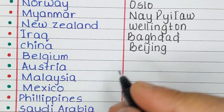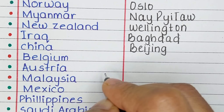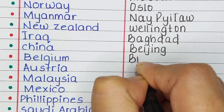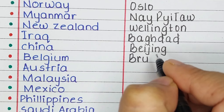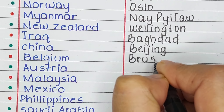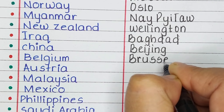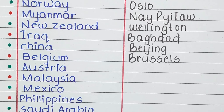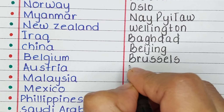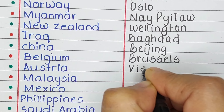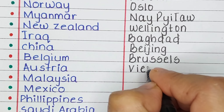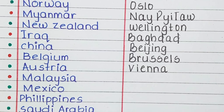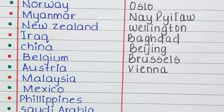Next is Belgium. The capital of Belgium is Brussels. Next is Austria. The capital of Austria is Vienna.